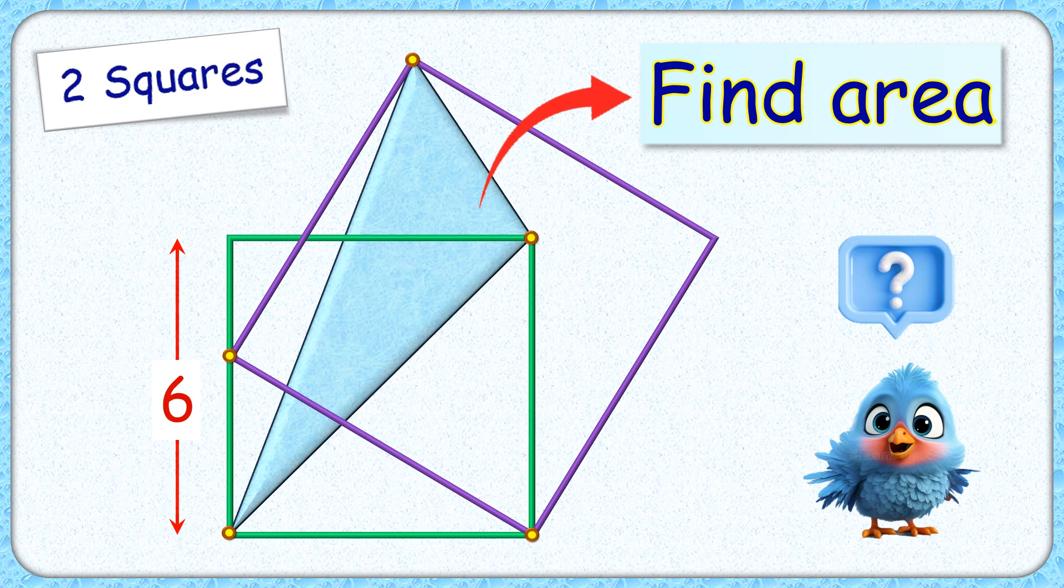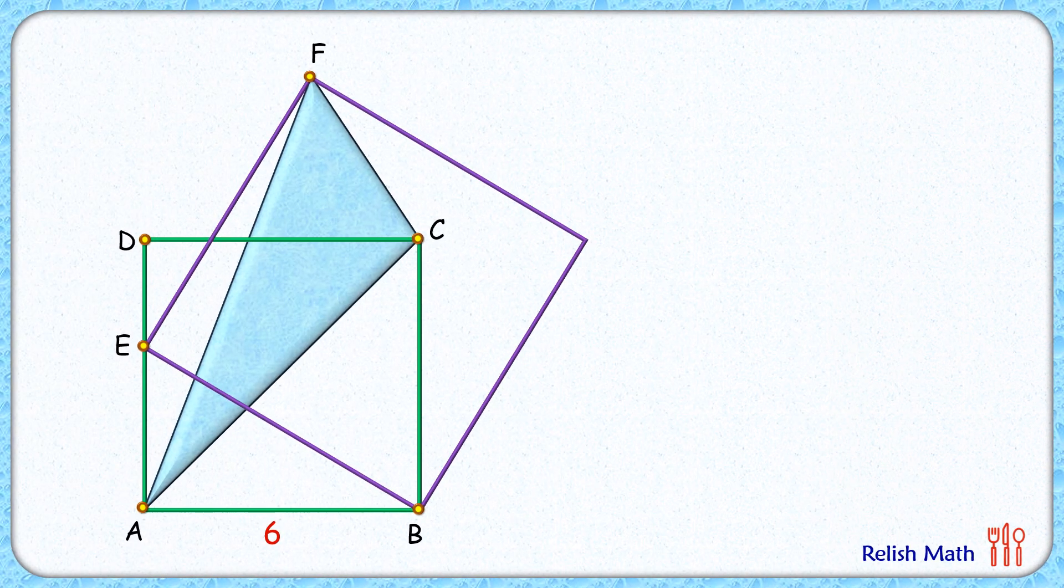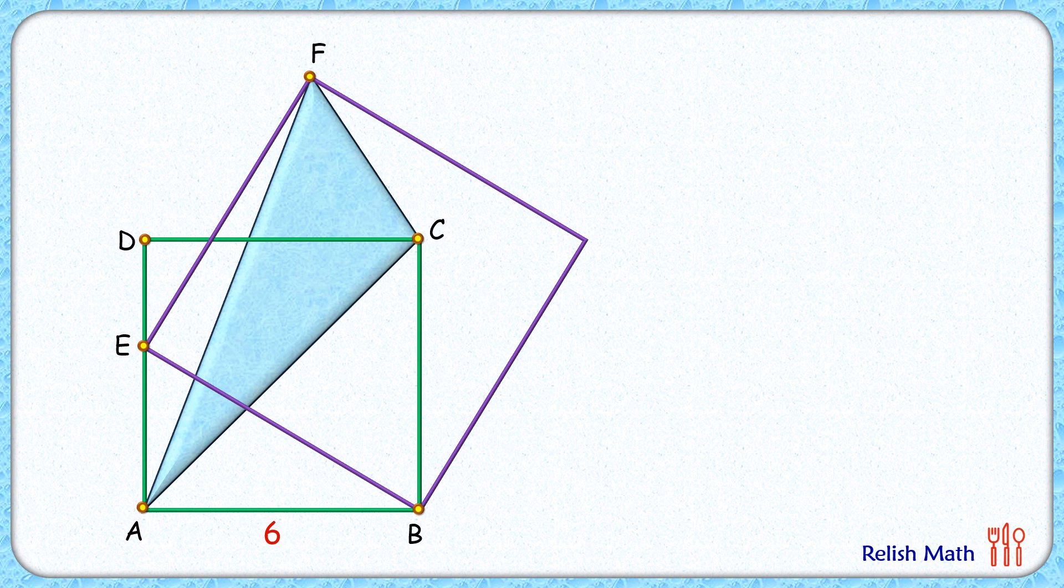Welcome everyone! This interesting question gives us two squares where the side length of this green square is 6 centimeters. The exciting part is, with this given data, we have to find the area of this blue triangle. Let's check this simple and elegant solution. We'll solve the same question in two ways: a formal approach and a logical approach.